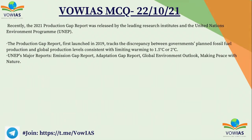Recently, the 2021 Production Gap Report was released by leading research institutes and UNEP, the UN Environment Programme. The Production Gap Report, first launched in 2019, tracks the discrepancy between governments' planned fossil fuel production and global production levels consistent with limiting warming to 1.5 to 2 degrees centigrade. UNEP's other major reports include: the Emission Gap Report, the Adaptation Report, the Global Environment Outlook, and Making Peace with Nature.